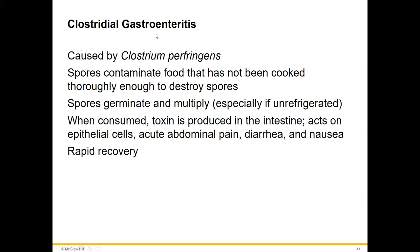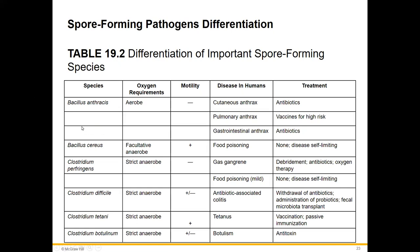Clostridial gastroenteritis is caused by C. perfringens: food not cooked thoroughly enough to destroy spores, which can survive a lot of heat, germinate, and multiply especially if food is left non-refrigerated. You get classic gastroenteritis but with pretty rapid recovery. C. perfringens in the gut is not so dangerous — your gut acids and proteases help clear it — but C. perfringens in the skin can be deadly, eating away muscle tissue.